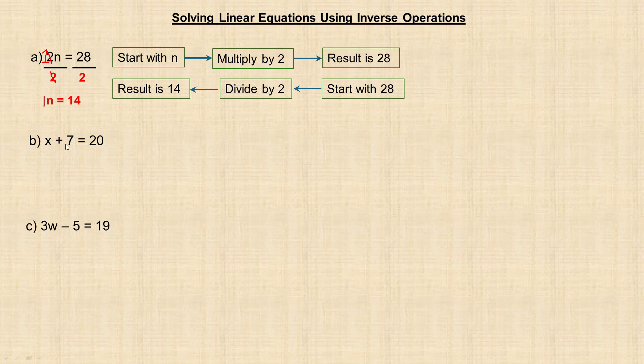The second equation is x plus 7 equals 20. We start with some number x, we want to know what x is, and you add 7, and you get 20. These first two are actually often called one-step equations, because there's one step. We multiply by 2 to get 28, or in this case, we're adding 7 to whatever x is to get 20. That's why they're called one-step. In the next example here, and the one on the next page, there's a second step. They're often called two-step equations.